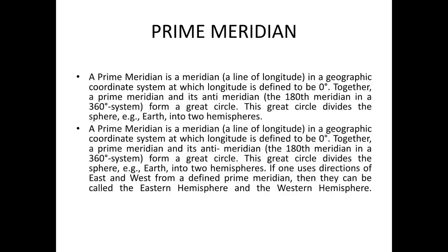On the other hand, the prime meridian is a meridian or a line of longitude in a geographic coordinate system at which longitude is defined to be zero degrees. Together, a prime meridian and its anti-meridian — the 180th meridian in a 360 degree system — form a great circle. This great circle divides the sphere, for example Earth, into two hemispheres: the eastern hemisphere and the western hemisphere.